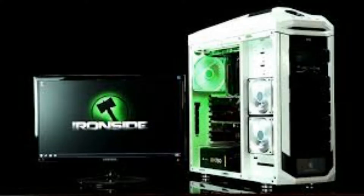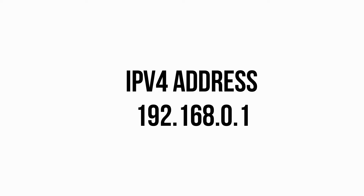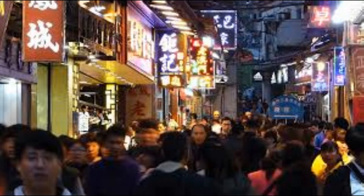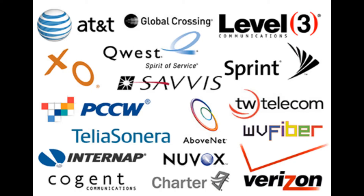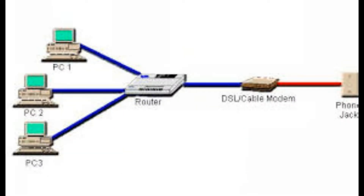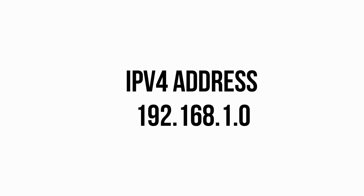An example of how a computer translates a number readable to an average user to binary — which nerds and computers understand — is your IP address. Take your IPv4 address 192.168.0.1; that is one of the most common default IP addresses supplied by your network provider and allows you to connect your computer to outside networks such as theirs.